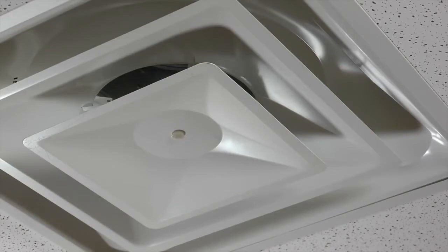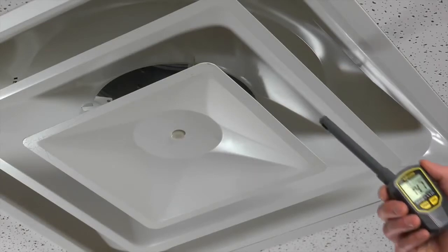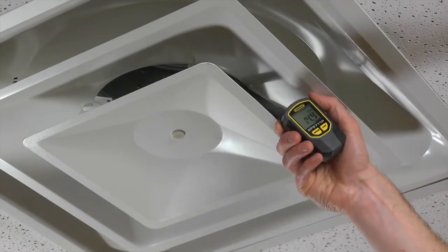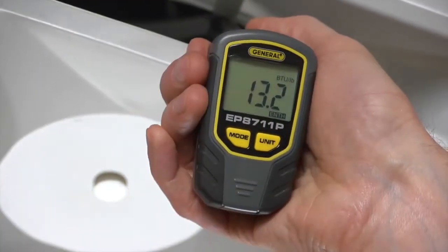Let's check enthalpy in this air conditioning system. We'll use BTUs per pound. Here, we'll check the supply duct. Insert the probe. Note the tick marks on the probe let you see how far you've inserted it. Probe swivels so it's easy to read the LCD.